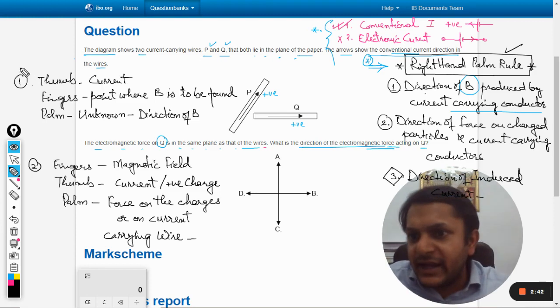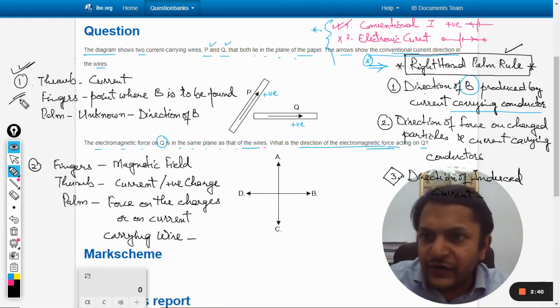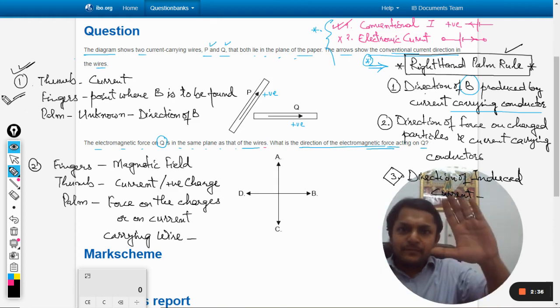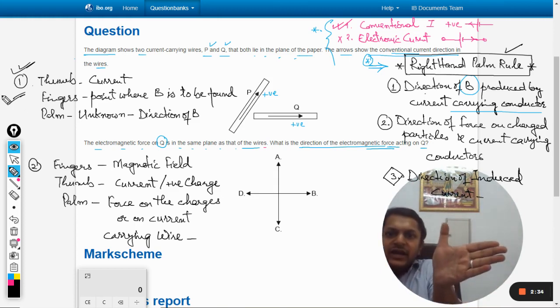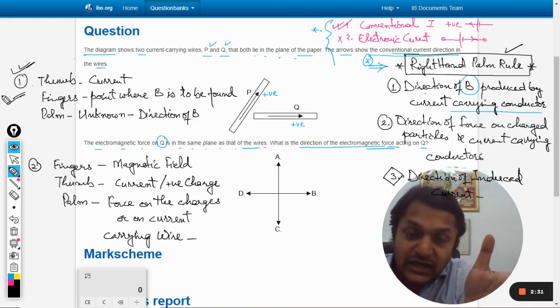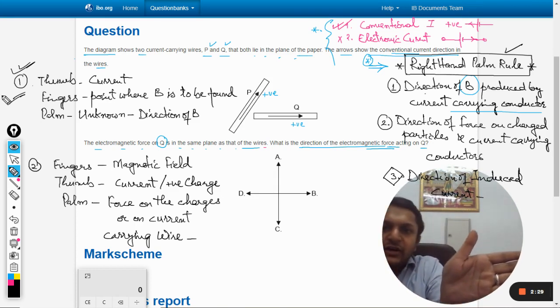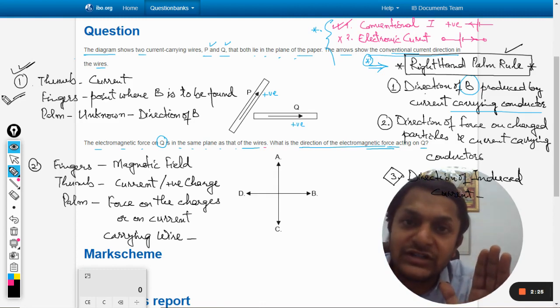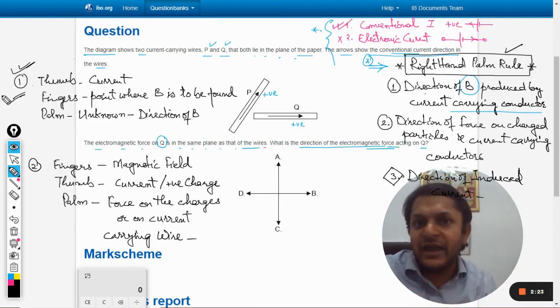I have explained this law here first. So what is happening is we have our right hand here and I place my thumb in the direction of the current that is P. So my thumb will be pointing there and my fingers will be pointing towards the location of the other wire which is Q.